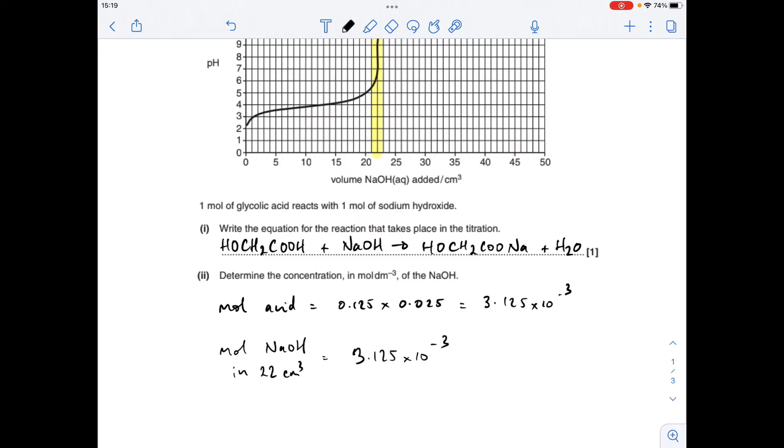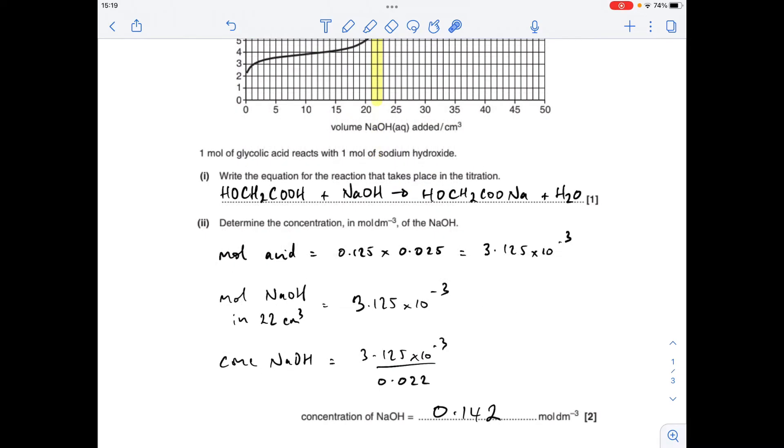So the concentration of the sodium hydroxide is the moles over the volume that they're in. So it's going to be the moles over 0.022. So 0.142 moles per decimeter cubed. I'm giving it to three significant figures because all the other data is to three.